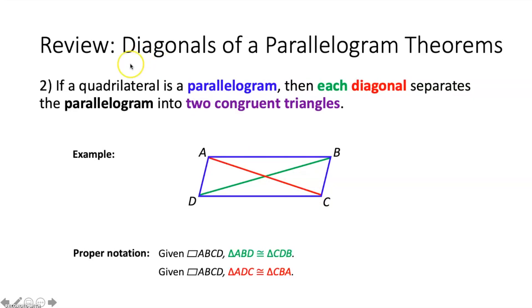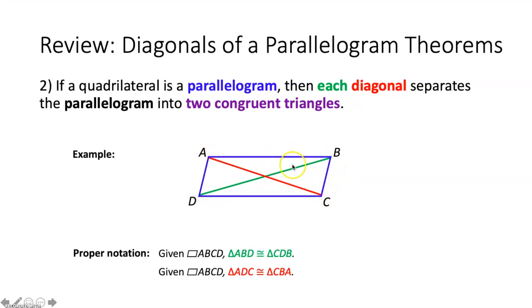The other diagonal theorem says if a quadrilateral is a parallelogram then each diagonal separates the parallelogram into two congruent triangles. So if we look at the red diagonal segment AC, triangle ADC has to be congruent to triangle CBA. If we look at the green diagonal, triangle ABD has to be congruent to triangle CDB.